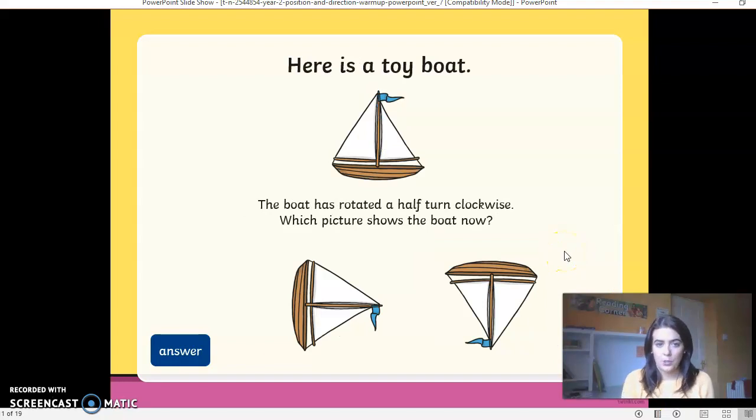Here is a toy boat. The boat has rotated a half turn clockwise. So think about it clockwise. If you look at your clock, am I going to be going this way because it's clockwise, or am I going to be going anticlockwise? So the opposite way. Correct. We are going to be going clockwise, which means that the boat is here. The boat is upside down.